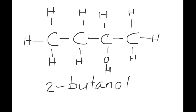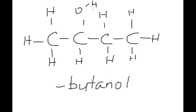We check whether moving the OH further to the next carbon creates a new isomer — but counting from either end gives us the same lowest number of two. So it remains butan-2-ol. The rule is to always keep the lowest possible number, so we have confirmed only two positional isomers for the straight-chain butanol.